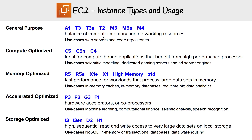Then you have compute optimized instances. These are ideal for compute-bound applications that benefit from high performance processors. As the name suggests, it's going to have more computing power. Use cases include scientific modeling, dedicated gaming servers, and ad server engines. Notice they all start with C, which makes it a little bit easier to remember.